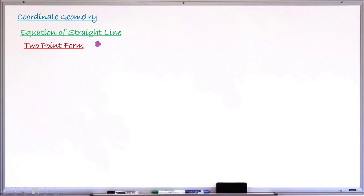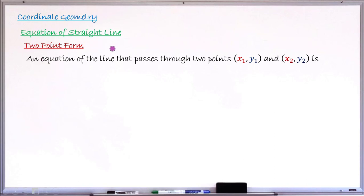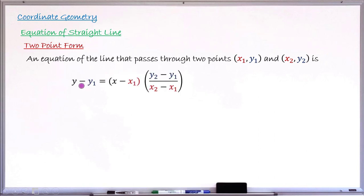To begin the lesson, let us learn what to do if we are asked to find or write the equation of a straight line that passes through two points whose coordinates are given. The equation of the line that passes through two points with coordinates (x₁, y₁) and (x₂, y₂) uses this simple formula: y minus y₁ equals, inside a bracket, x minus x₁, times another bracket.